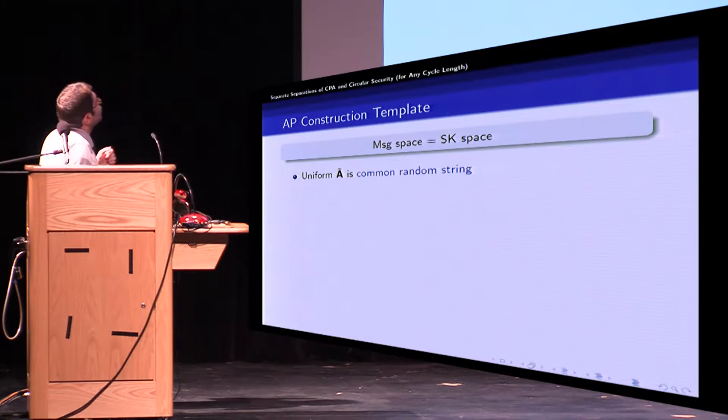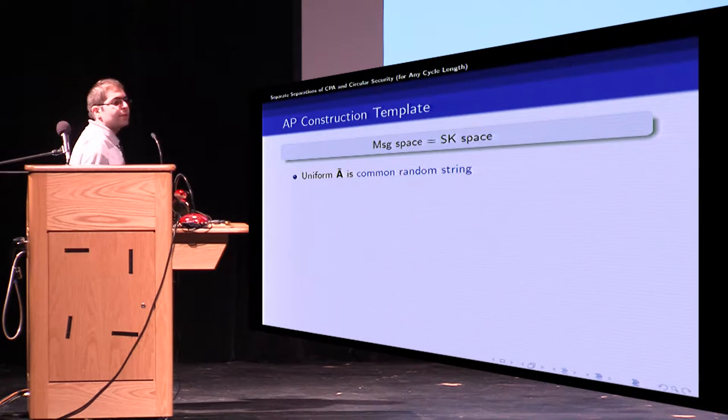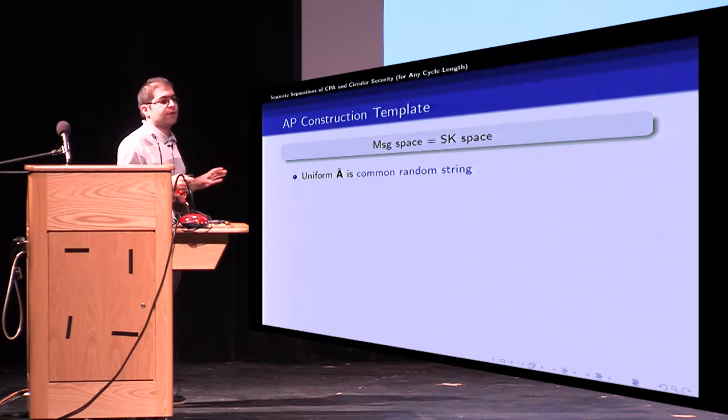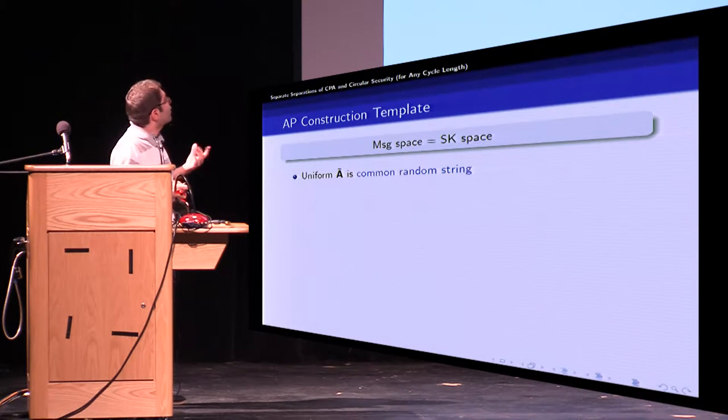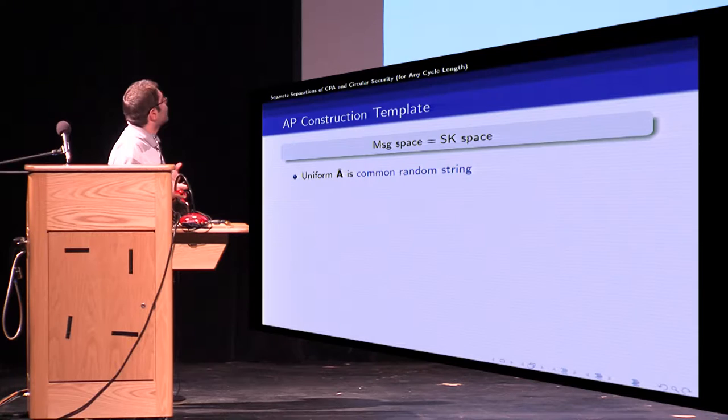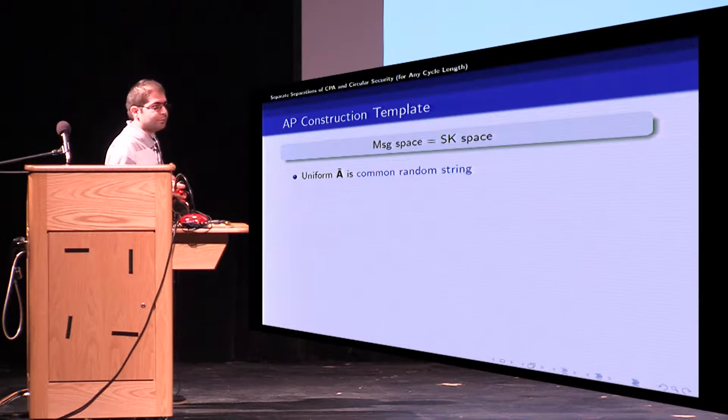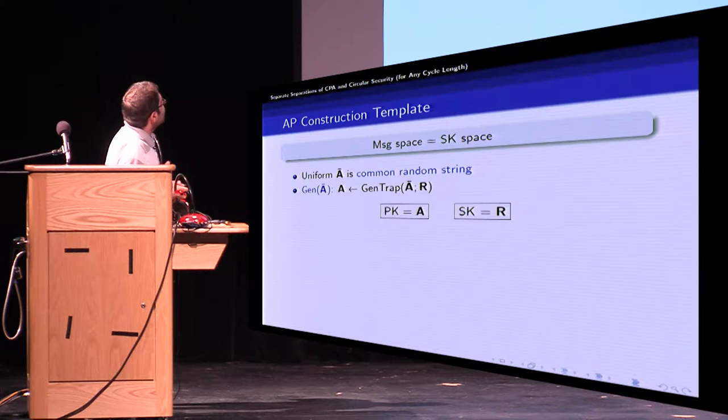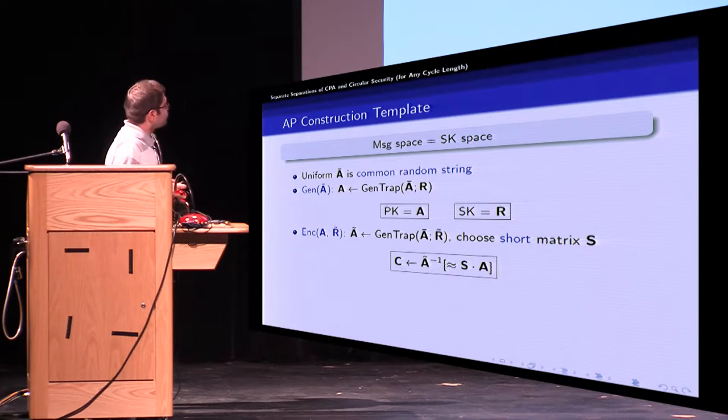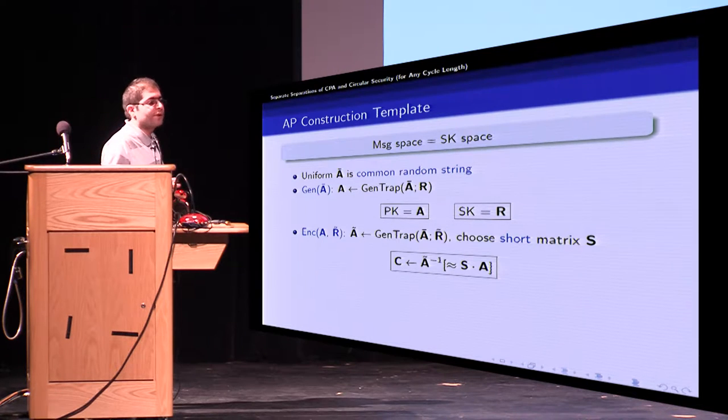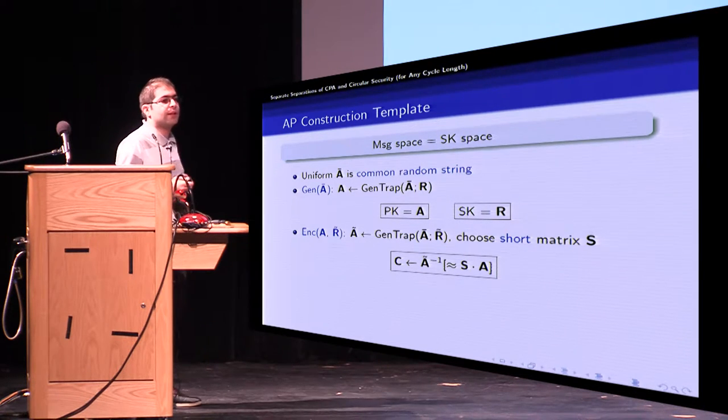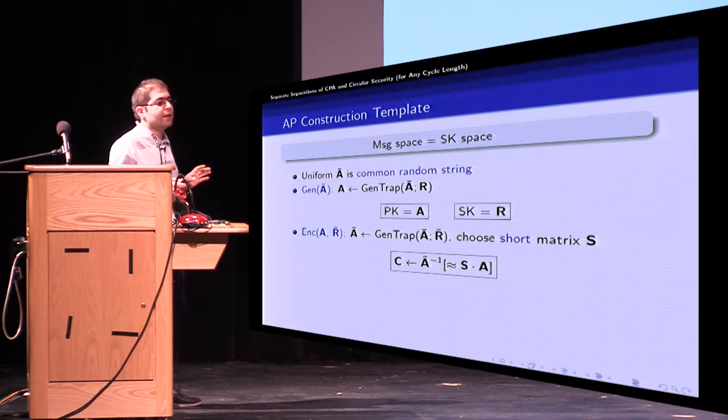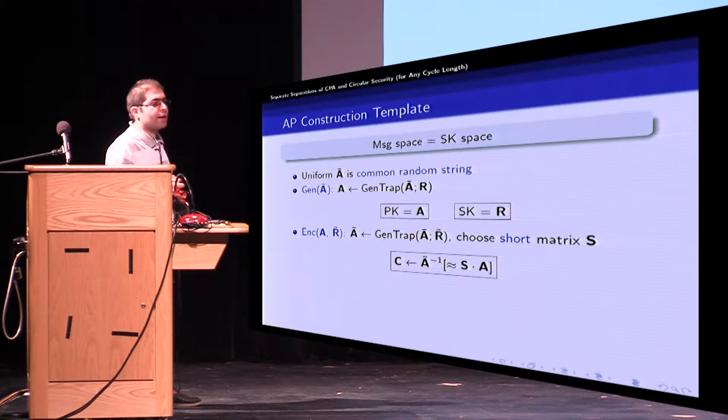Now let's get into the construction. Here the message space is identical to the secret key space. First to set up we sample a uniform A bar as common random string. So key generation is very simple. To generate a key you sample a trapdoor from randomness space and then you run GenTrap on A bar and R. So A is our public key and R is our secret key.